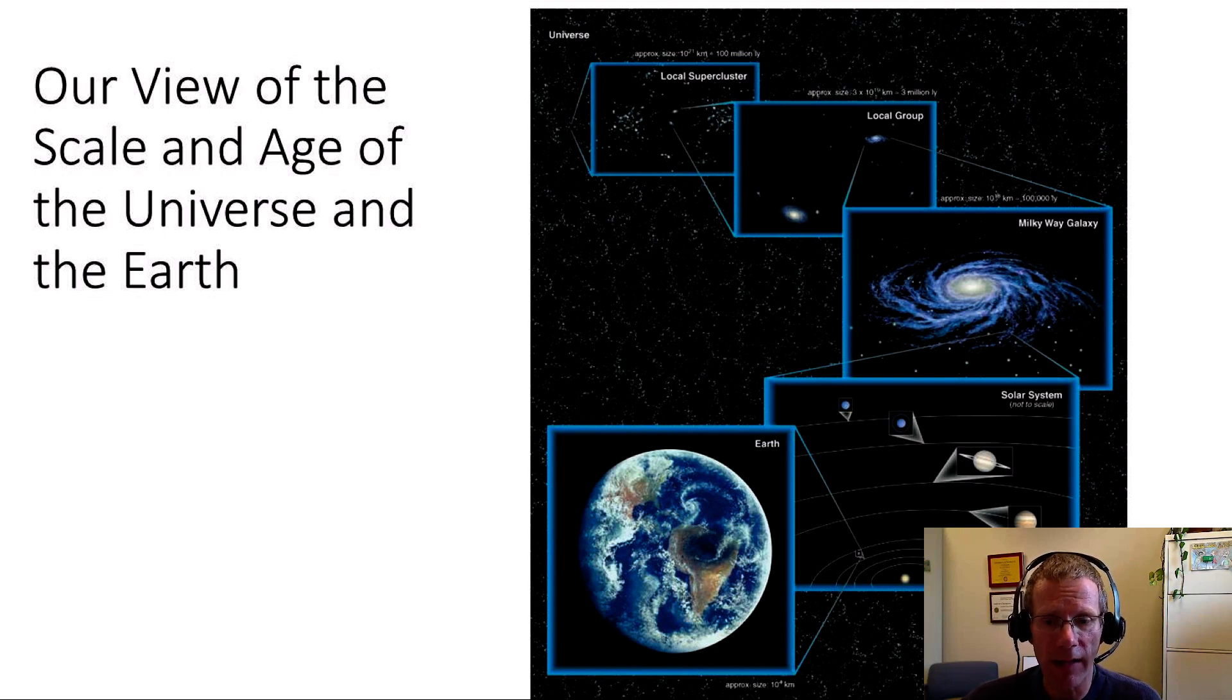That Milky Way galaxy is about 10 to the 18th kilometers across. But once we get into these high exponents, 10 to the 18th, it's a little bit difficult to conceptualize. So we've switched to another unit called light years. Another way to describe the size of our galaxy is that it's about 100,000 light years across. That means if you were on one side of the galaxy, you turned on a flashlight, that light would take about 100,000 years to get to the other side of the galaxy.